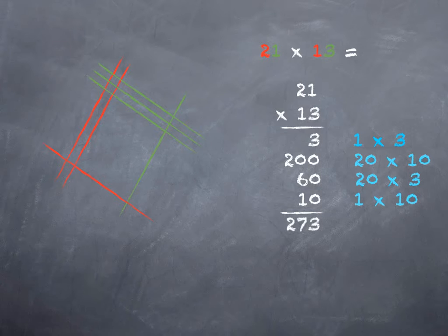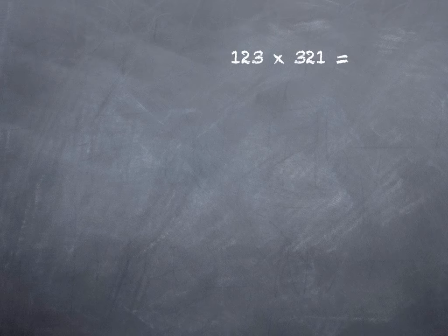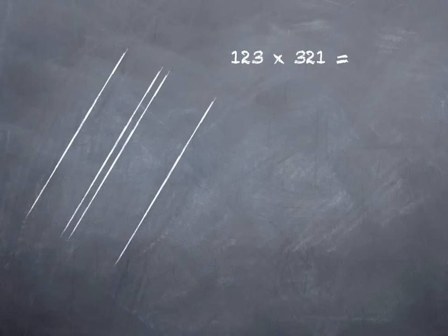If we want a little bit trickier problem, one that requires regrouping, we can try 123 times 321.